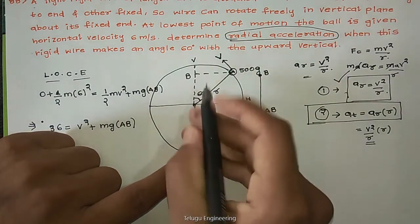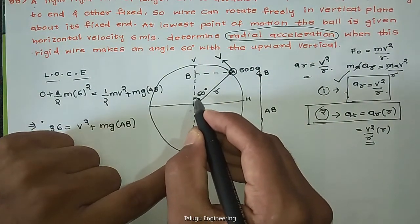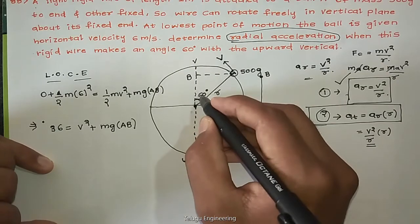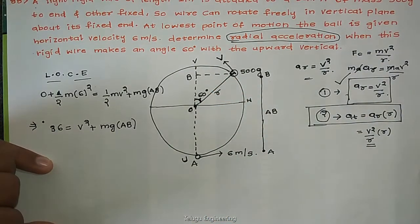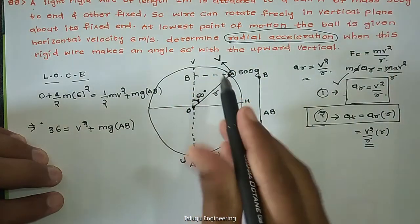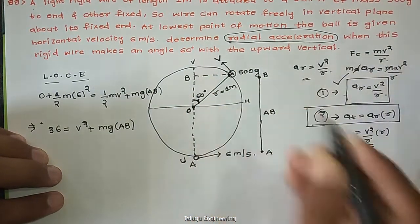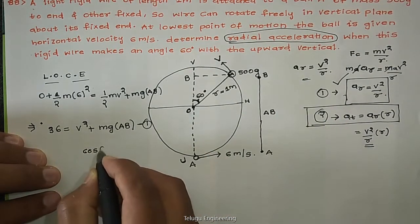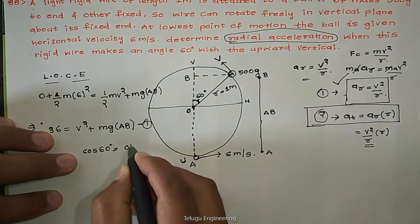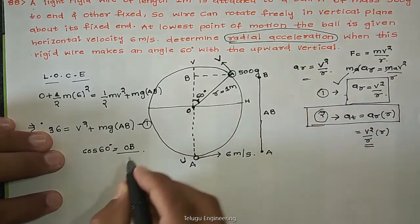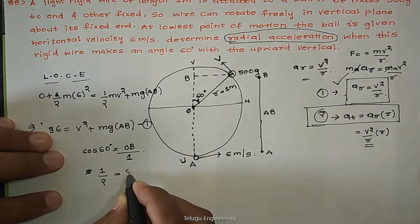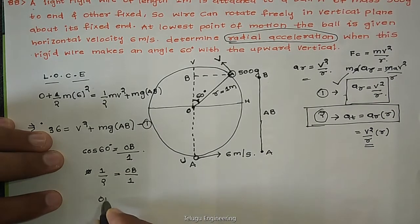To find the height AB, we use cos 60 equals adjacent over hypotenuse. The adjacent side is OB and the hypotenuse is the radius R equals 1 meter. So cos 60 equals one half equals OB divided by 1, giving OB equals one half meter. The height AB equals AO plus OB. AO is the radius equals 1 meter, and OB equals one half. Therefore AB equals 1 plus one half equals three halves meters.